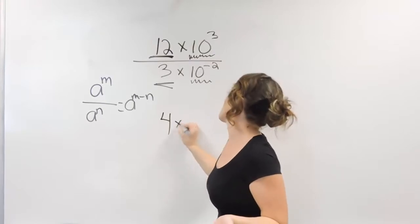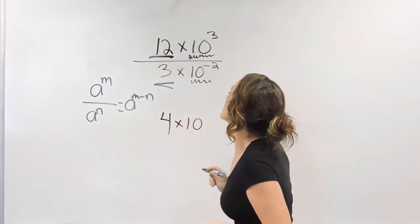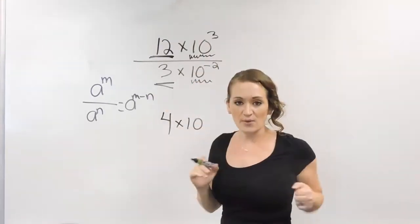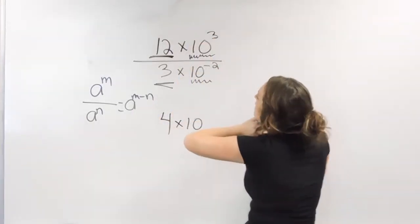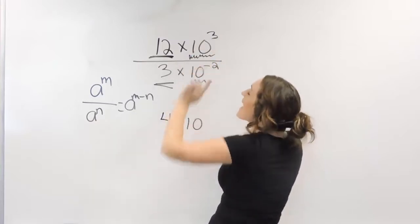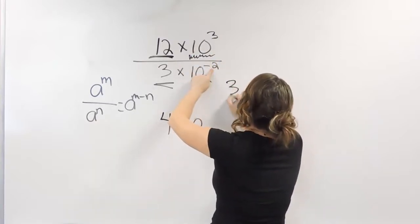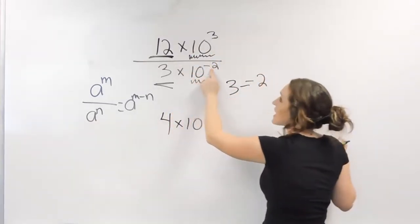Scientific notation is always times ten to some power. So, let's figure out what that power is going to be. Quotient rule says we need to subtract these. So, we're going to be doing three minus negative two. And if it helps, maybe write that out to the side.